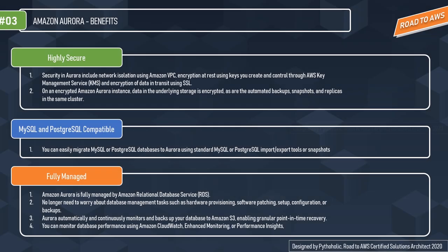The third point is highly secure. Security in Aurora includes network isolation using Amazon VPC, encryption at rest using keys you create and control through AWS Key Management Service (KMS), and encryption of data in transit using SSL. On an encrypted Amazon Aurora instance, data in the underlying storage is encrypted, as are the automated backups, snapshots, and replicas in the same cluster.